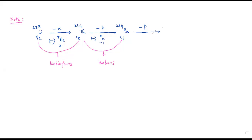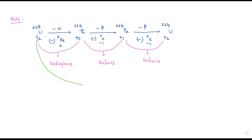Taking another beta emission, we get atomic number 92 — that is 91 minus (-1). When these two are isobars to each other because a beta particle has been emitted. Now looking at the first element and the last one, these two are isotopes to each other.